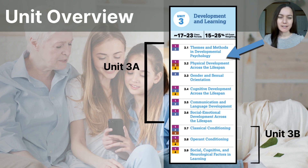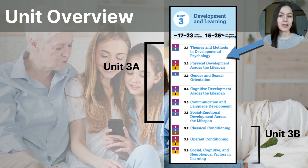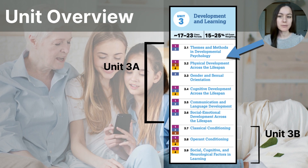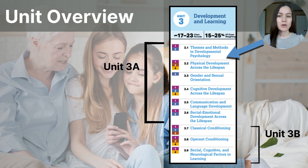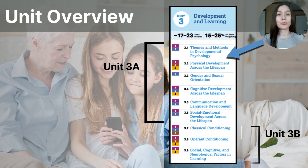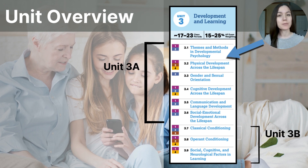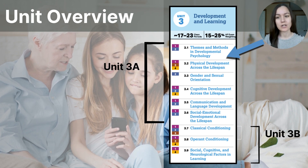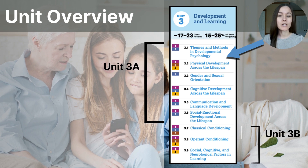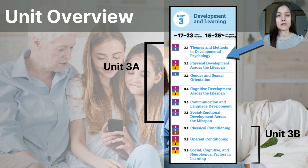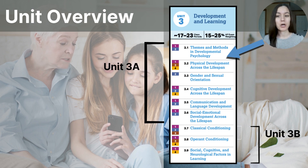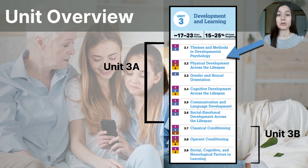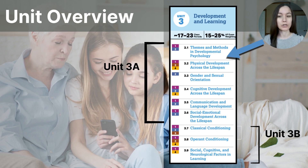Let's start with some context. Here is our Unit 3 outline, and you can see that it covers two overarching themes: development and learning. Both of these are really broad concepts in psychology, and they both involve growth and change. There's a lot of content in Unit 3, so I've decided to separate them into Part A and Part B. Part A will focus only on human development, and Part B will focus on the aspects related to learning.